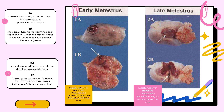In 1B, the corpus hemorrhagicum has been sliced in half. Notice the remnant of the follicular lumen that is filled with a blood clot, indicated by the arrow. In 2A, notice the picture in late metestrus. The area designated by the arrow is the developing corpus luteum. While in 2B, the corpus luteum seen in 2A has been sliced in half, and the arrow indicates a follicle that was sliced.